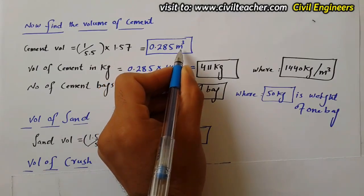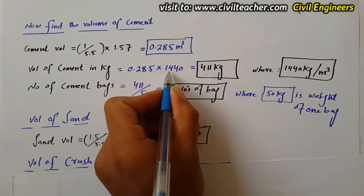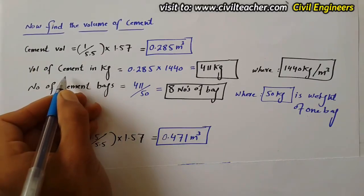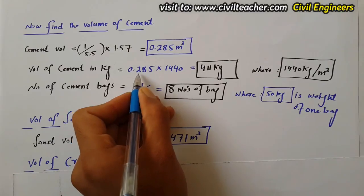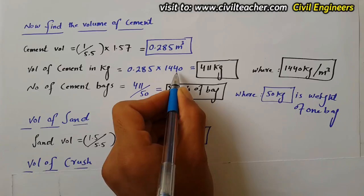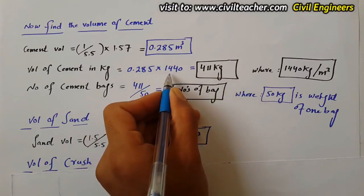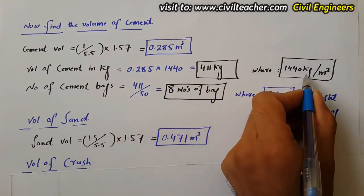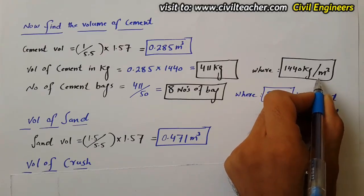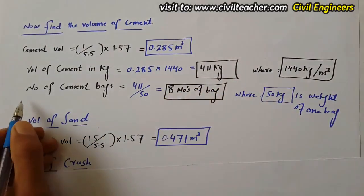Now convert cement volume to kg. Volume of cement is 0.285 cubic meters multiplied by 1440, which gives 411 kg. Here 1440 kg/m³ is the density of cement. So the density of cement is 1440 kg per cubic meter, giving us 411 kg of cement required.